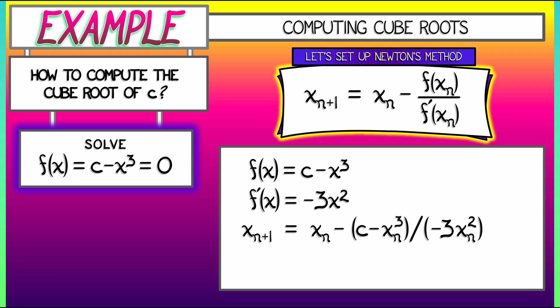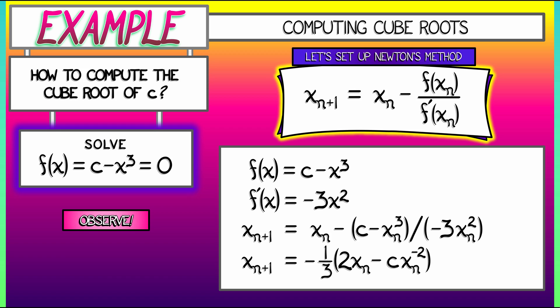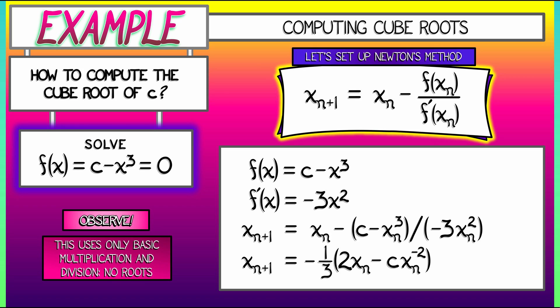If we do a little simplification—factoring out a one-third—we get xₙ₊₁ equals negative one-third times the quantity 2xₙ minus c times xₙ to the negative 2. Now, what do we observe? There's only basic multiplication, addition, and division. That's it—you do that over and over. There are no roots involved; no square roots or cube roots. This can be done with basic operations.